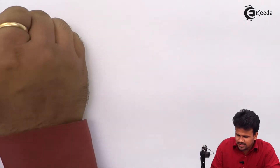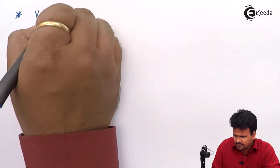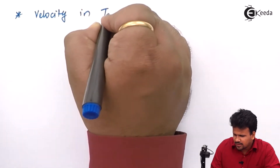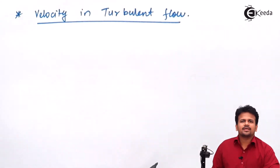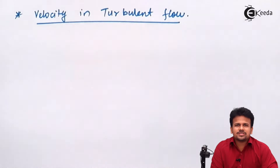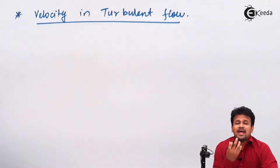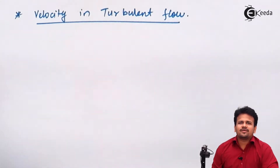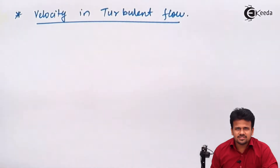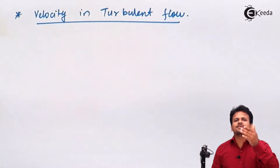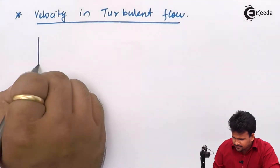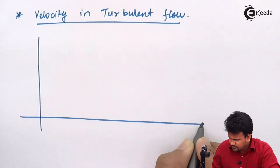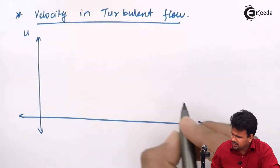Before studying Prandtl mixing length theory, let us first see what is velocity in a turbulent flow. While studying velocity in a turbulent flow, we know that the velocity is not constant as in the case of laminar flow. So we will plot a graph of velocity versus time, where the velocity will be fluctuating from its maximum value to a minimum value and anywhere in between.